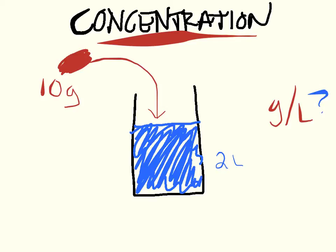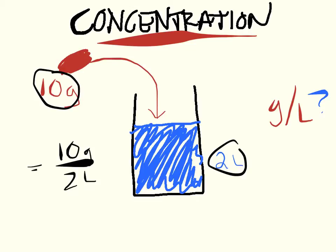Well, all you would need to do is take the number of grams and divide it by the number of liters. Which in this case, since we have 10 grams and 2 liters, the concentration will be 10 grams over 2 liters, which equals 5 grams per liter.